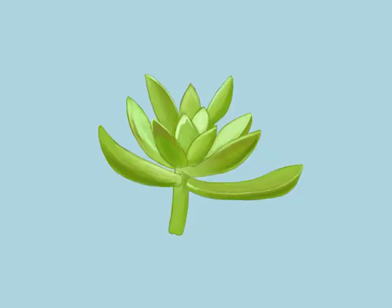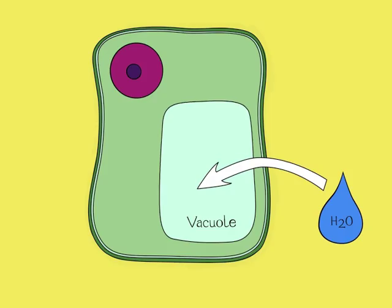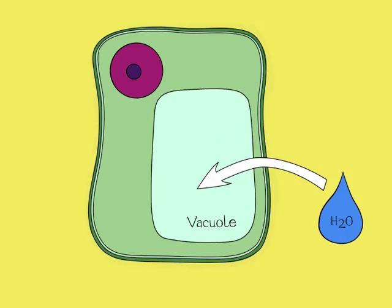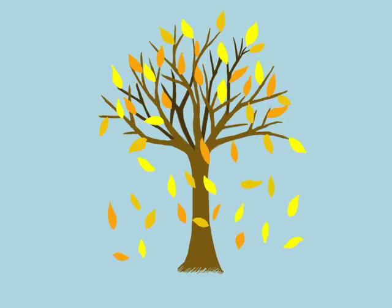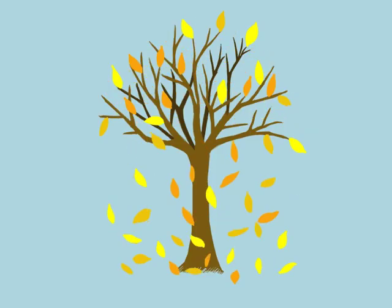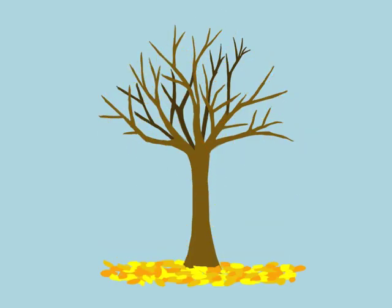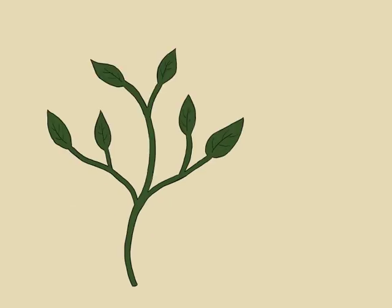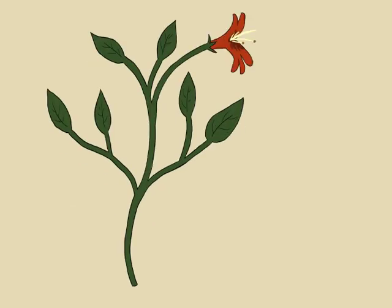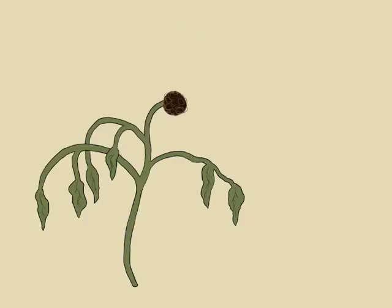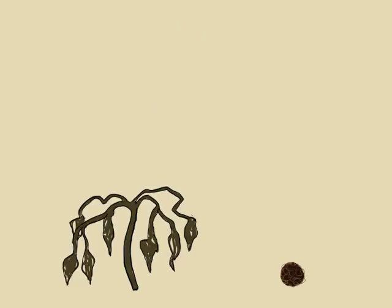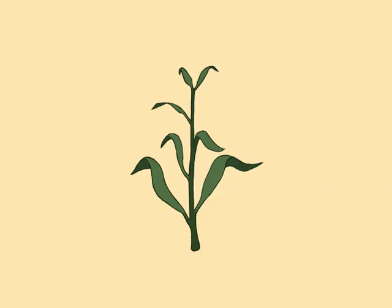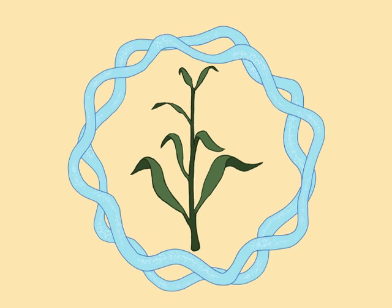Some plants have become succulent, storing water inside their very cells. Other plants may shed their leaves during a drought and become dormant. Another adaptation is a rapid life cycle in which the plant dies off and leaves behind seeds that will germinate once conditions improve. So most plants cope with drought by trying to avoid it altogether.